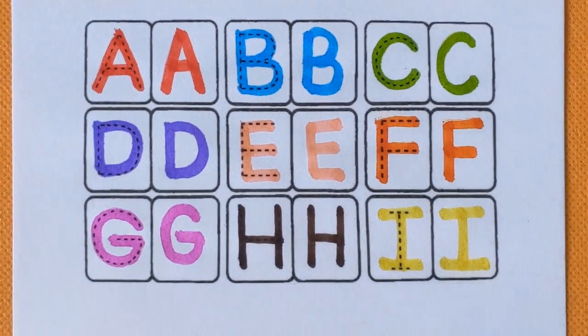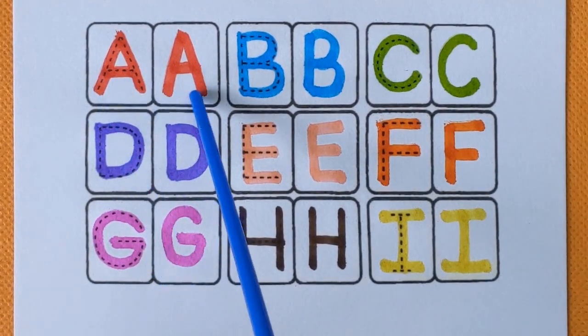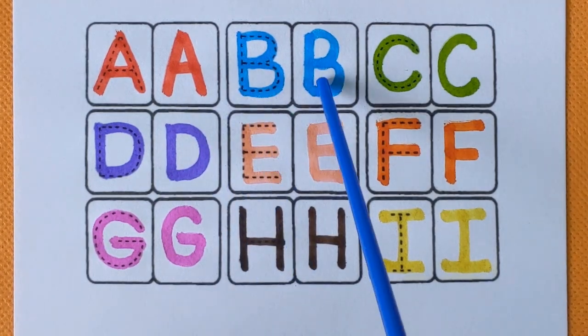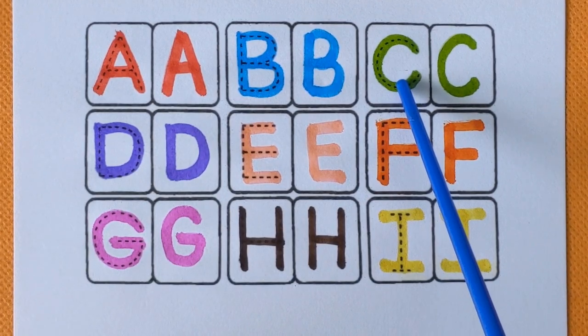Now let's revise with me. It's A, alphabet A, red color. Alphabet B, blue color. This is C, light green color.